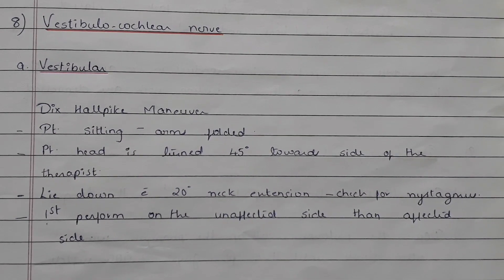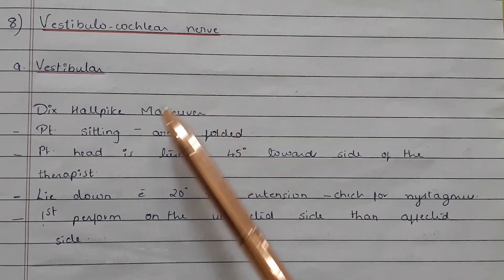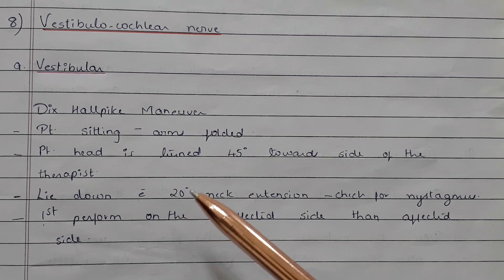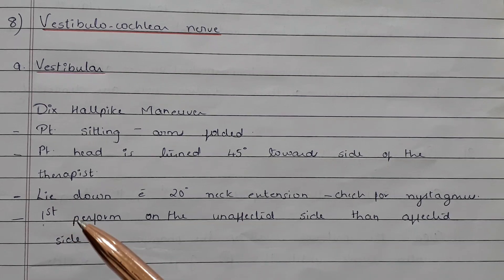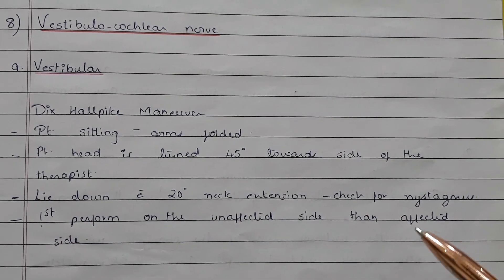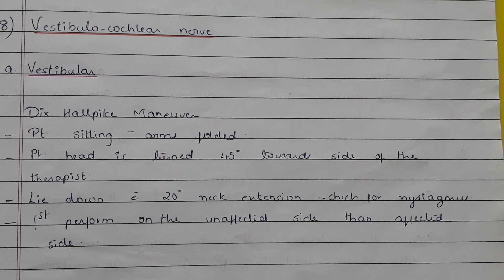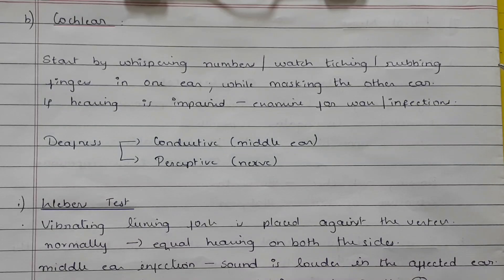The eighth cranial nerve is the vestibulocochlear nerve — it is a pure sensory nerve. To check the vestibular part, we use the Dix-Hallpike maneuver. The patient is in a sitting position with arms folded. The patient's head is turned 45 degrees towards the side of the therapist. The patient is made to lie down with 20 degrees of neck extension, and the patient's eyes are checked for nystagmus. First perform on the unaffected side and then on the affected side. For the cochlear part, start by whispering numbers, watch ticking, or rubbing fingers in one ear while masking the other. If hearing is impaired, examine for wax or for infections.